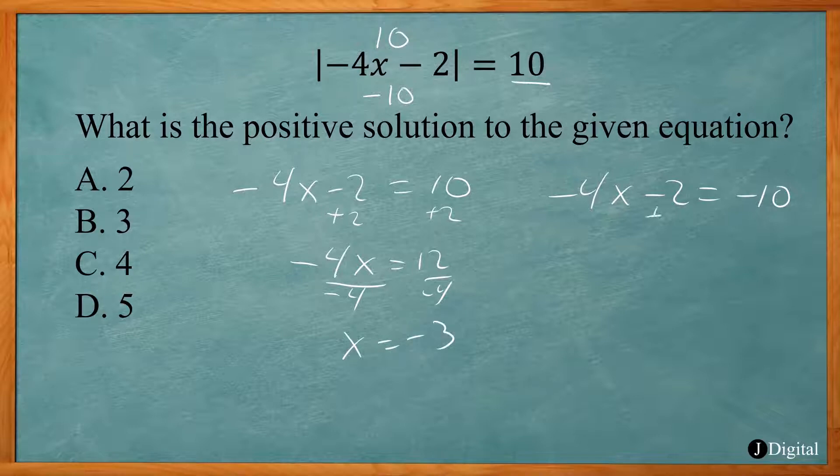And here you do the same thing. Add 2 to both sides. Negative 4x equals negative 8, divided by negative 4. X equals 2. So answer choice A is the correct one.